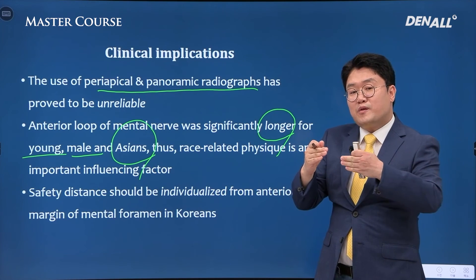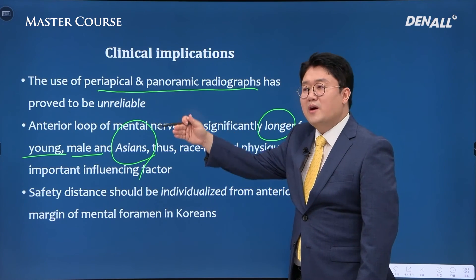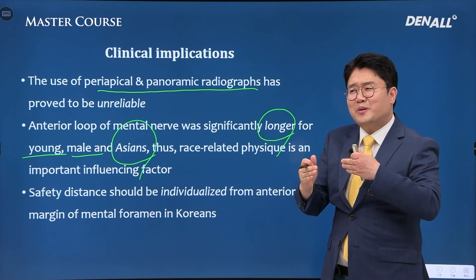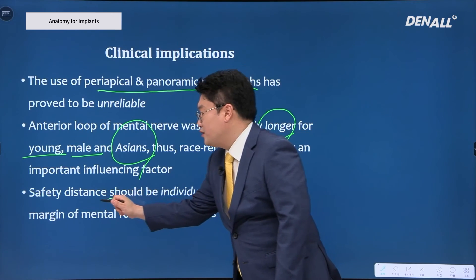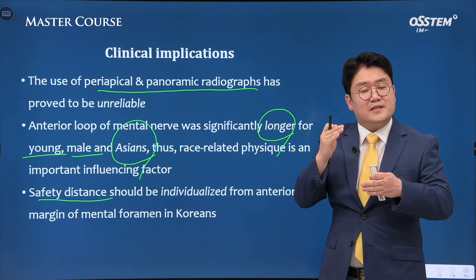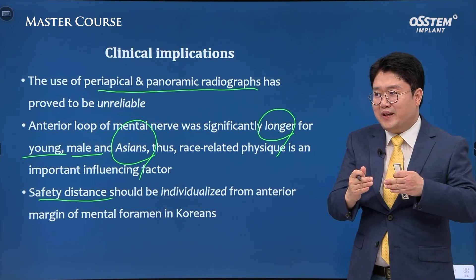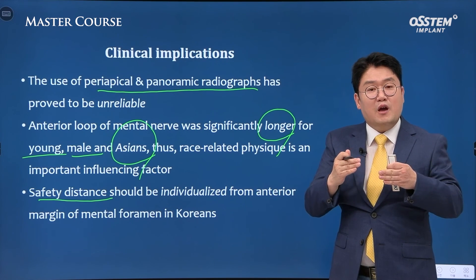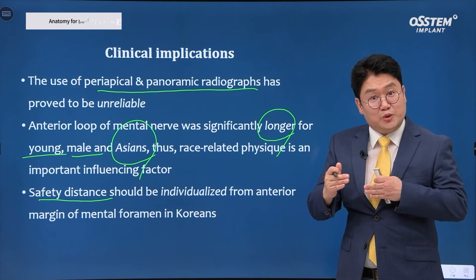When looking at the two Korean studies, the cadavers that showed the longer anterior loop turned out to be younger with a higher percentage of males. I would like to emphasize that when placing implants, the safety distance to avoid nerves should not be followed blindly. Depending on the individual, it should be set differently rather than just going with 3 or 4mm. Koreans among Asians tended to have an anterior loop, but the standards vary.